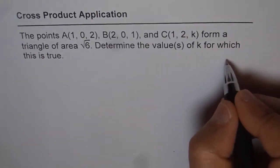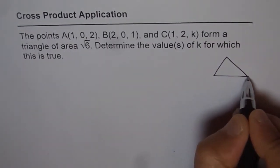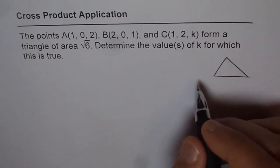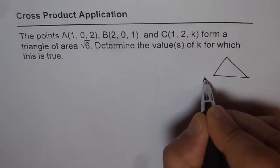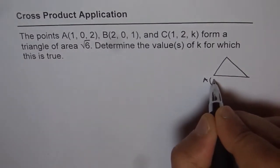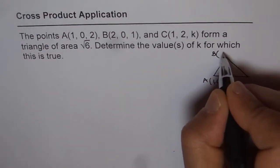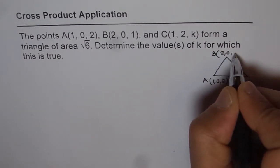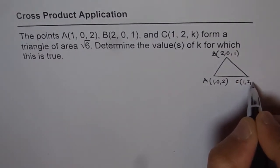Let's make a rough sketch. When I say rough sketch, I'm not really interested in knowing where exactly A, B, C are, but it helps me organize. Point A is (1, 0, 2), point B is (2, 0, 1), and point C is (1, 2, k).